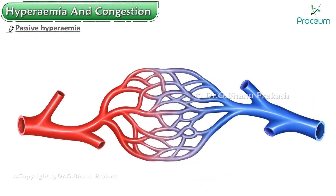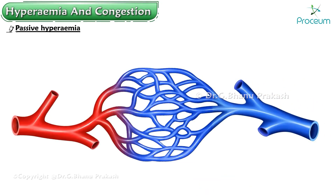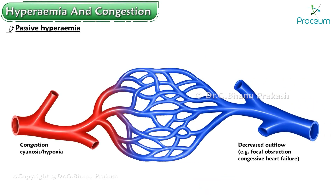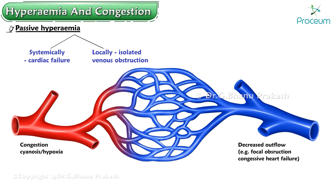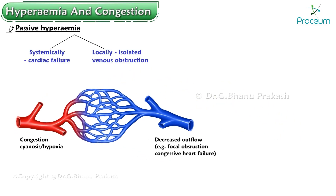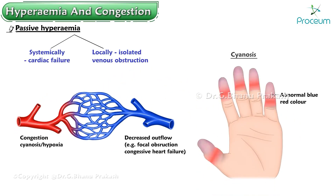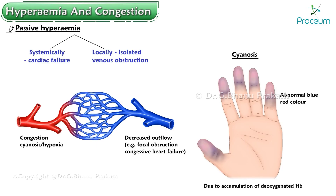Congestion, or passive hyperemia, can occur systemically as in cardiac failure, or locally as a consequence of an isolated venous obstruction. Congested tissues have an abnormal blue-red color — cyanosis — due to the accumulation of deoxygenated hemoglobin in the affected area.